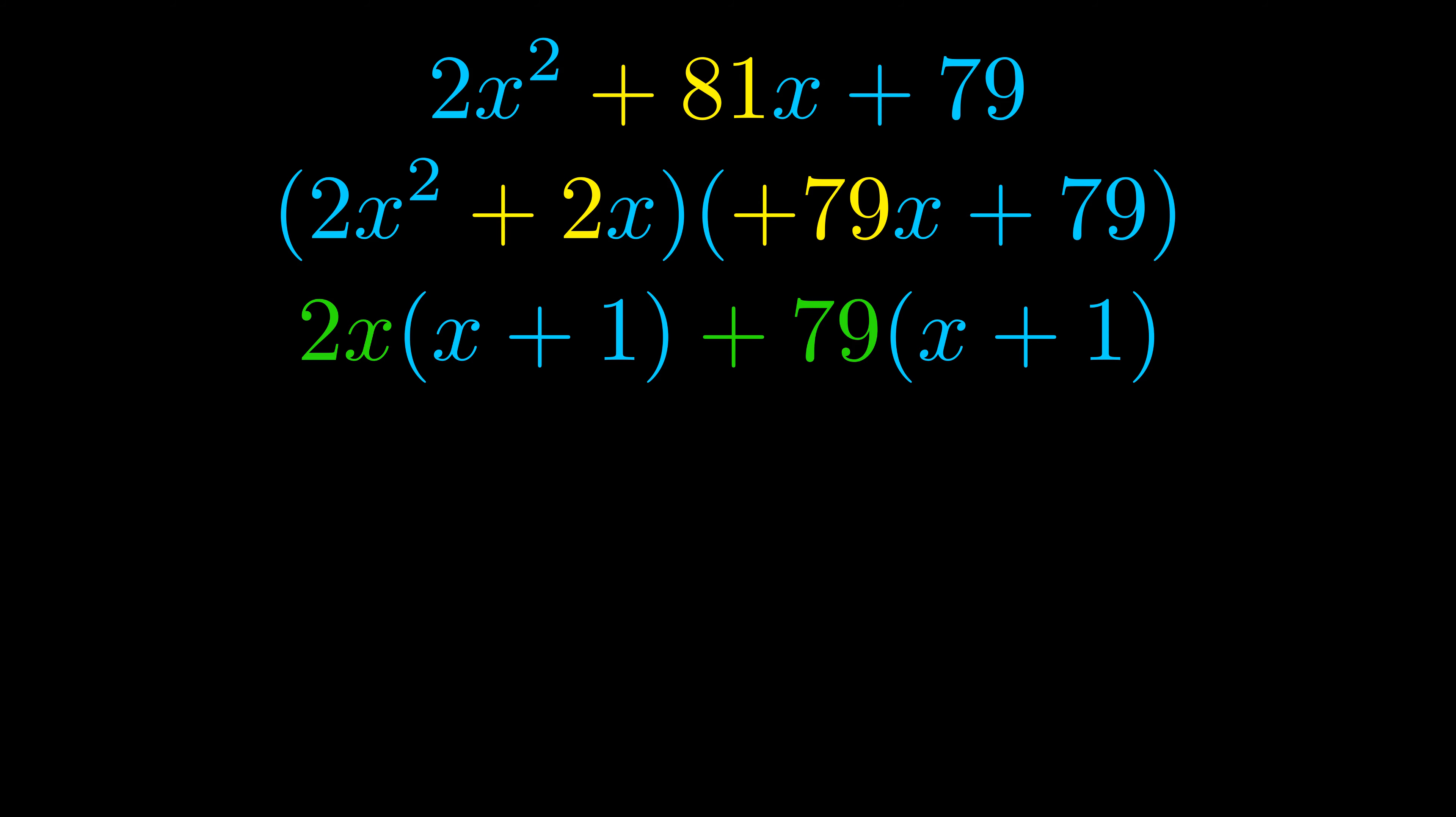Notice also how what remains inside of the parentheses is the same in both cases. The blue values are the same. Those blue values will become one of our factors and we will combine the two green values, the GCFs that we pulled out, to get the other one. And that is our fully factored equation.